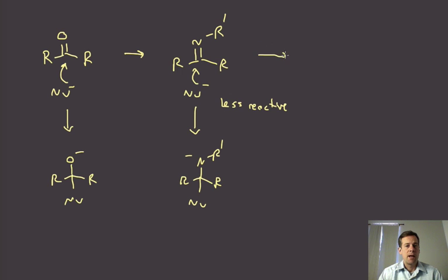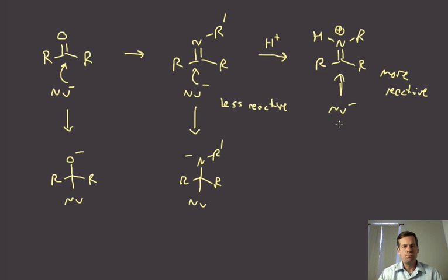On the other hand, if we can access the iminium ion form, either by protonation or if this was a secondary amine and we can get this to a cation, these now are actually significantly more reactive than either of these. You can see here that this would be neutral.